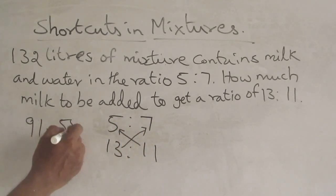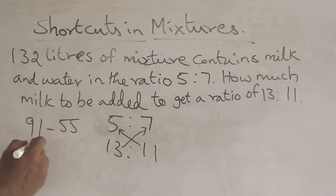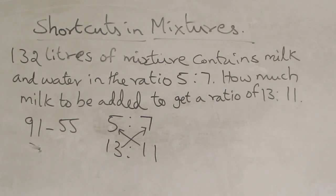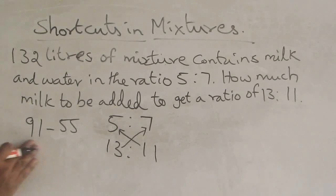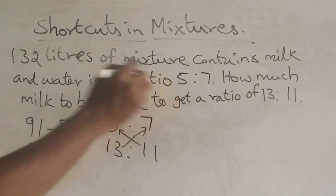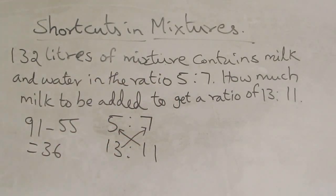What is 91 minus 55? It is 36. So the answer is 36 liters of milk should be added.